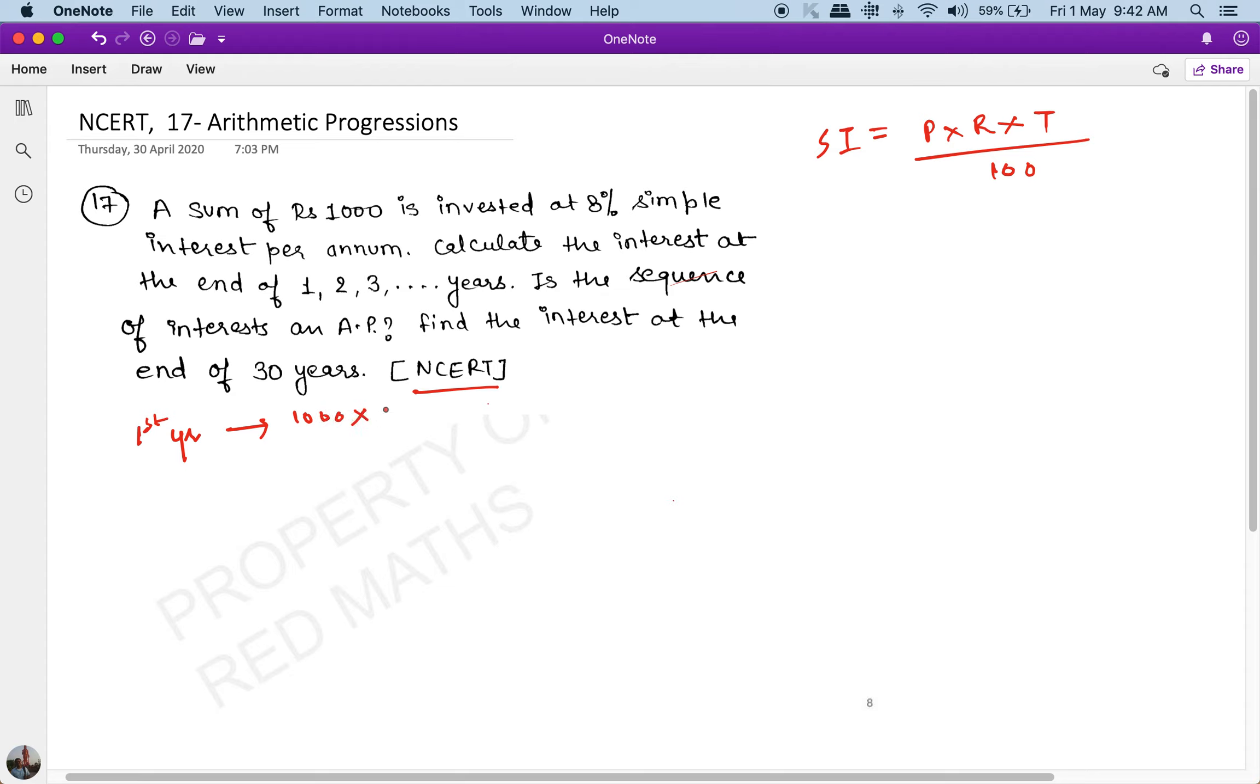Upon 100. So this is cancelled, this will cancel. The interest at the end of one year is 80 rupees. The interest at the end of the second year...